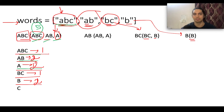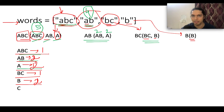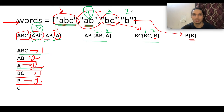The final score of 'abc' is five. The next word is 'ab' — its prefixes are 'a' and 'ab'. Score of 'a' is two, score of 'ab' is two, so the answer for 'ab' is four. Next we have 'bc' — prefixes are 'b' and 'bc'. Score of 'b' is two, score of 'bc' is one, so the answer for 'bc' is three.